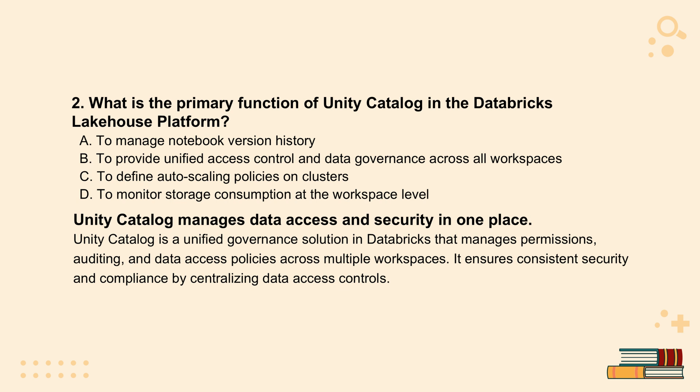What's another big headache for data engineers, especially in bigger companies? Probably managing access, security — making sure the right people see the right data — and compliance. Which brings us to Unity Catalog. The source has a question about its main function. It's core to the Databricks Lakehouse platform, and the answer is: Unity Catalog provides unified access control and data governance across all workspaces. It's about centralization — instead of managing permissions per table, per cluster, per workspace, which can be a nightmare, Unity Catalog brings it all under one roof.